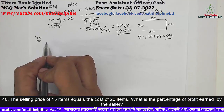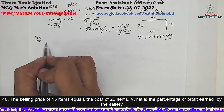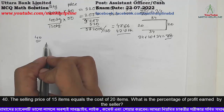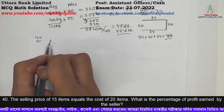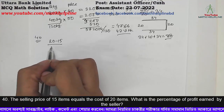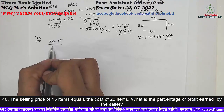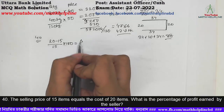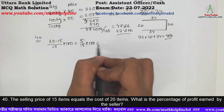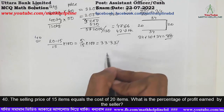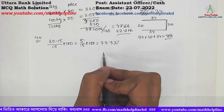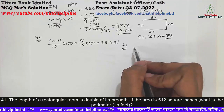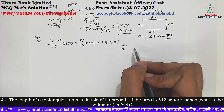What is the percentage of profit earned by the seller? The length of a rectangular room is double its breadth. If the area is 512 square inches, what is the perimeter?